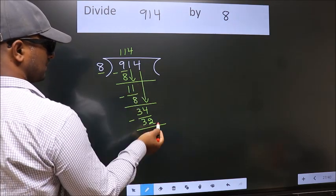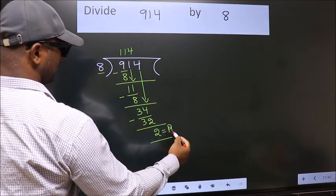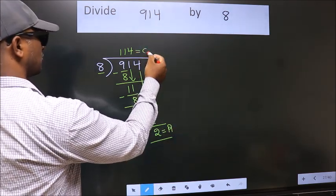No more numbers to bring it down. So, we stop here. This is our remainder. This is our quotient.